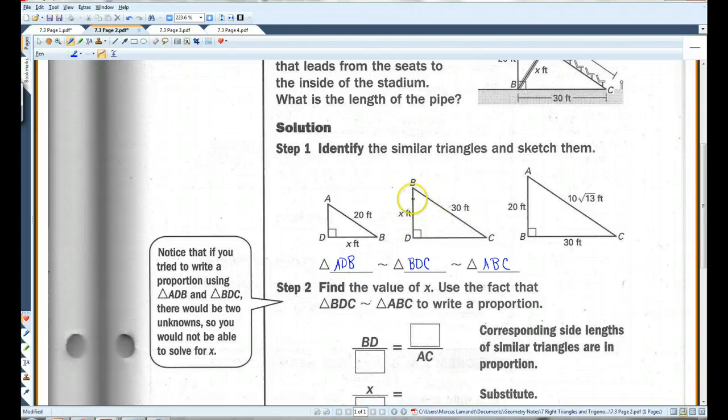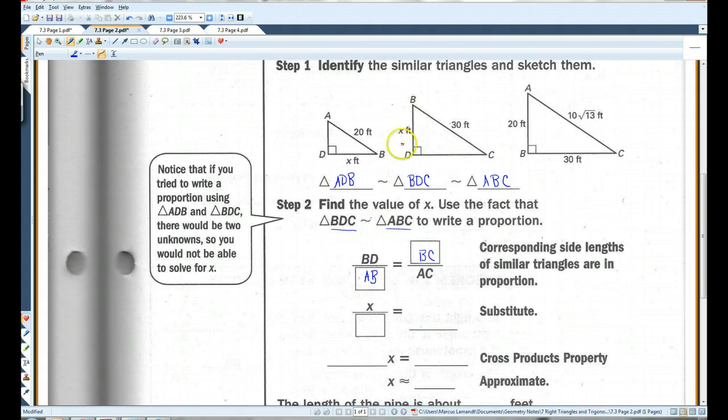Here is X. We could use this triangle and this triangle, or we could use this triangle and this triangle. The problem apparently wants us to use BDC and ABC. BD corresponds with AB. And BC corresponds with AC. BD is X. AB is 20. BC is 30. And AC is 10 root 13.